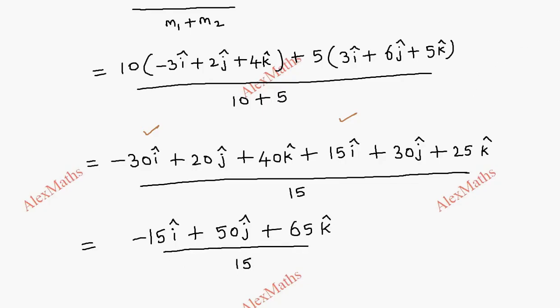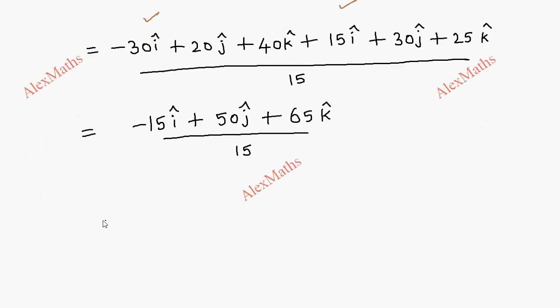This is the i term divided by... So r vector equals first term minus 15 i cap by 15, that is 50 j cap by 15, plus 65 by 15 k cap.